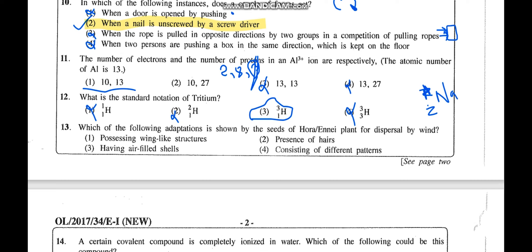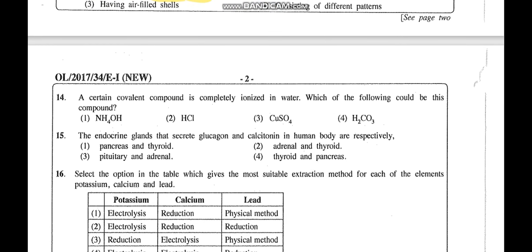Question 13: Which adaptation is shown by the seeds of the plant for dispersal by wind? For wind dispersal, seeds should be lightweight and have wing-like structures. Option 1 — presence of wing-like structures — is correct, so seeds can fly in the air. Having an air bladder is for dispersal by water, and hooks are for dispersal by animals. Wing-like structures is the best option — the answer is the first one.